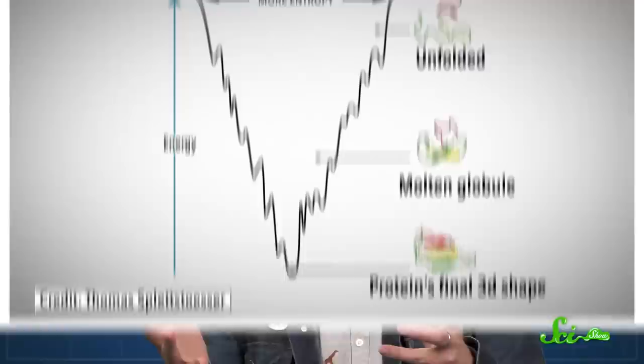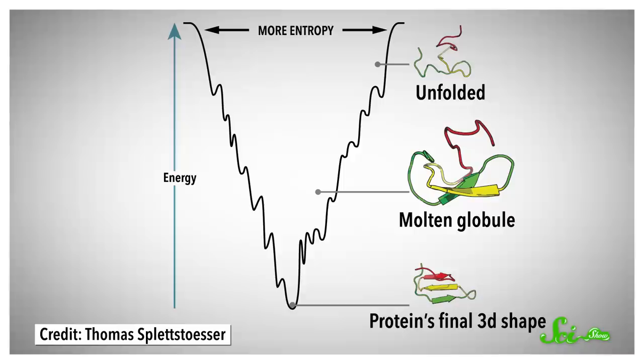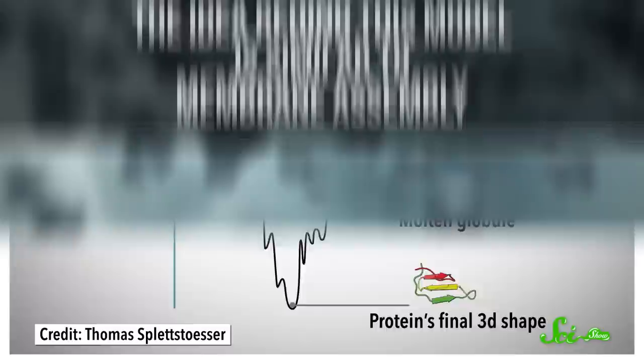The molten globule is an intermediate form similar to the protein's final 3D shape, in which hydrophobic amino acids essentially fall into a flexible blob at the center of a baby protein, away from the water. The idea behind this model is similar to membrane assembly.